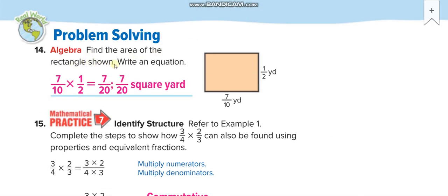Find the area of the rectangle shown. Write an equation: 1/2 times 7/10. 7 times 1 equals 7, 10 times 2 equals 20. So 7/20 square yards.